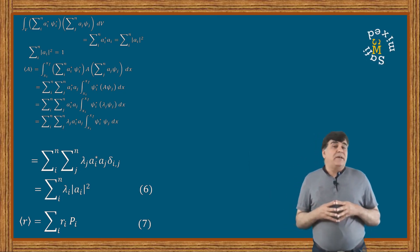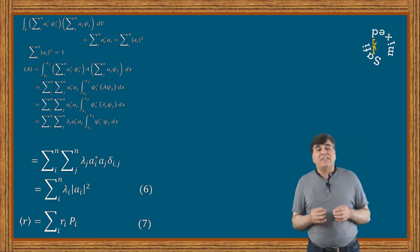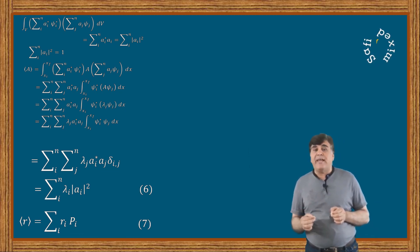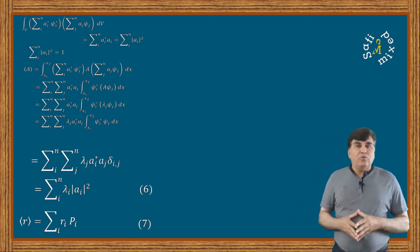In the light of equation 7, we conclude from equation 6 that the expectation value of an operator A in a state which is not the eigenfunction of the operator A is given by the weighted average of its eigenvalues.